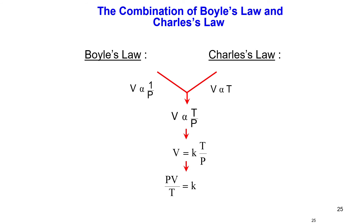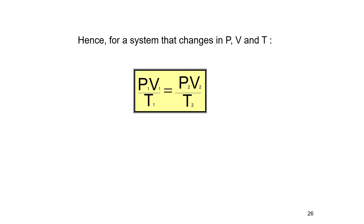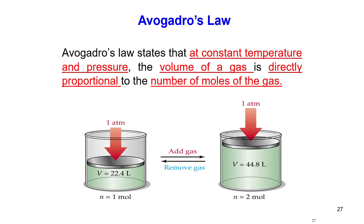Combining Boyle's Law (V ∝ 1/P) and Charles' Law (V ∝ T), we get V ∝ T/P, so PV/T = k. For a system changing in pressure, volume, and temperature: P₁V₁/T₁ = P₂V₂/T₂.